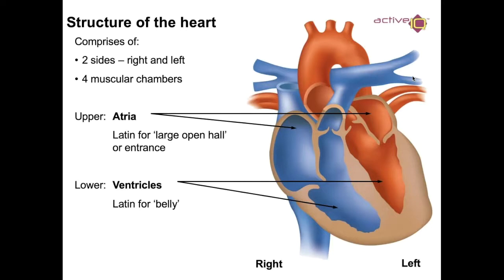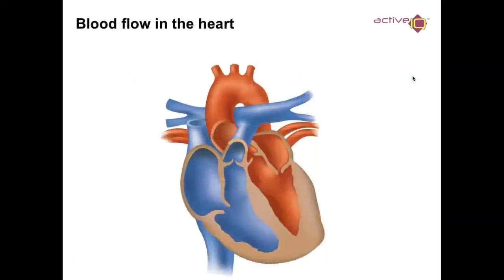If we look at atria — Latin for 'open hall or entrance' — you know that blood is coming in. And ventricles is Latin for 'belly,' so you know it's going to be underneath. Blood always flows from A to V: atria to ventricles.